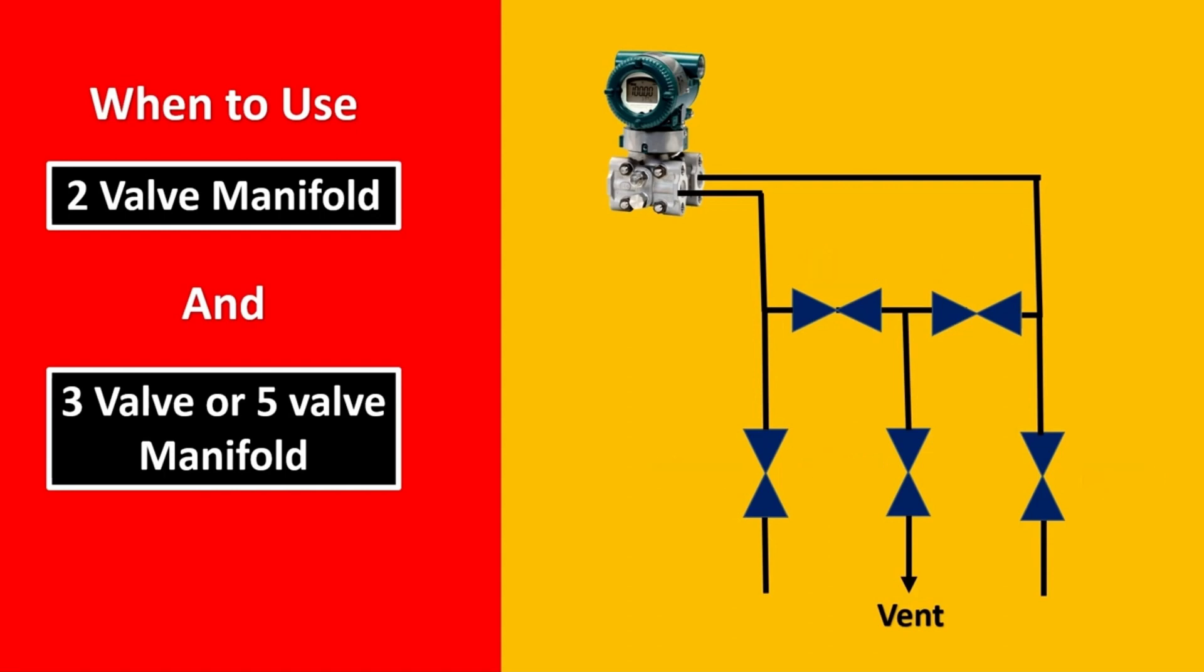Here in operation when you want to remove your transmitter, you would have to keep the extreme 2 valves closed and the middle 3 are going to remain open. So, the first 2 would equalize it and the third one would vent it out either to a closed system or to the atmosphere. 5-way manifold is specially used when you want to drain it.